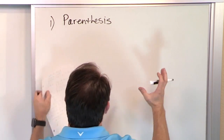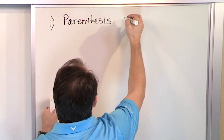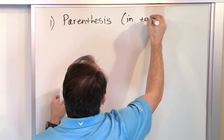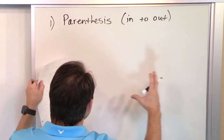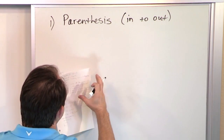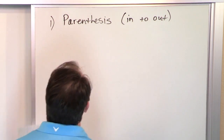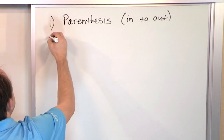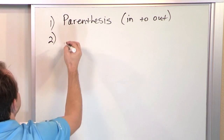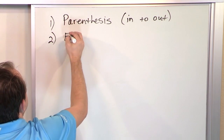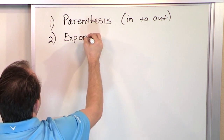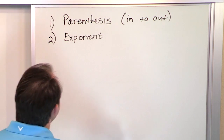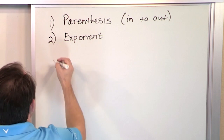If you have multiple parentheses, you always work on the inside first — in to out. So you start in the innermost parentheses and work your way out from there. That's the number one thing. And then beyond that, the next priority is exponents. So if you have any two squared or five squared or whatever, you do those next.